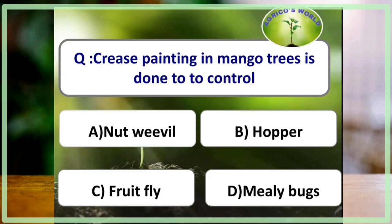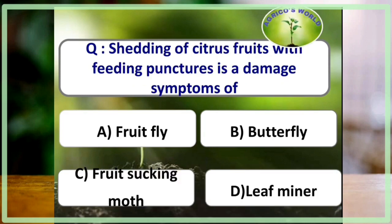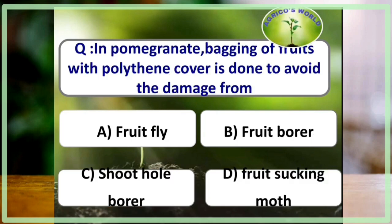Grease painting in mango trees is done to control mealybugs. The female mealybug lays eggs in the soil; the eggs hatch and the nymphs try to ascend the tree and settle in the inflorescence. Grease painting makes it difficult for the nymphs to ascend, reducing damage. Shedding of citrus fruits with feeding punctures is a damage symptom of fruit sucking moth. In pomegranate, bagging of fruits with polythene cover is done to avoid damage by fruit sucking moth.